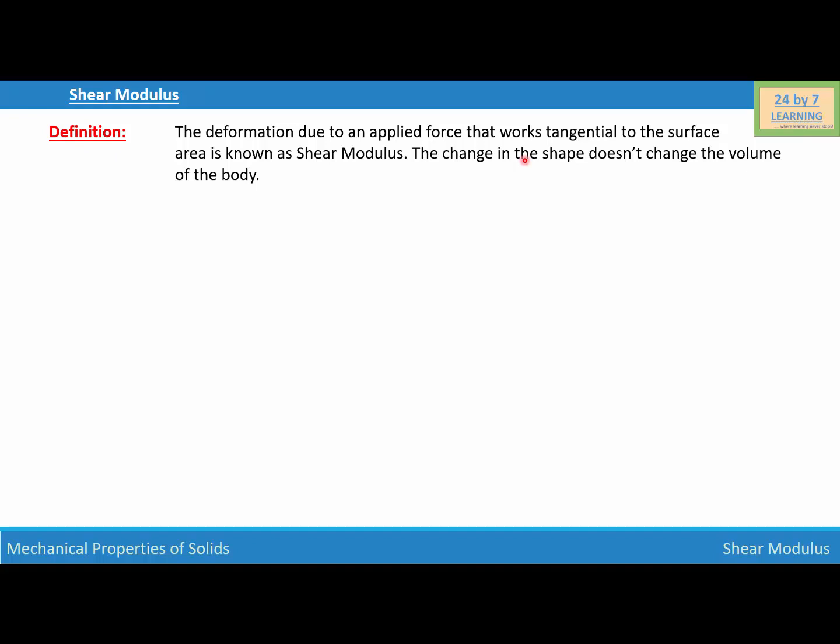In other words, we can say that if we apply a tangential force to a body, then the body is not the same. For example, if the body is a rectangular shape and if we apply the tangential force, that rectangular shape is changed into a parallelogram shape. So basically there is no change in the volume of the body, but the shape of the body changed from rectangle to parallelogram.